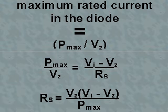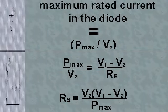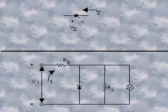So that P max divided by V sub Z is equal to V sub I minus V sub Z divided by R sub S. Or R sub S is equal to V sub Z times V sub I minus V sub Z divided by P max, which provides the minimum value of R sub S.